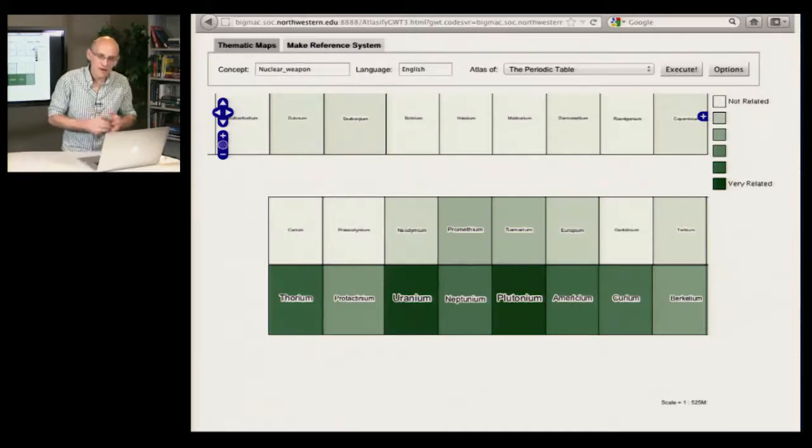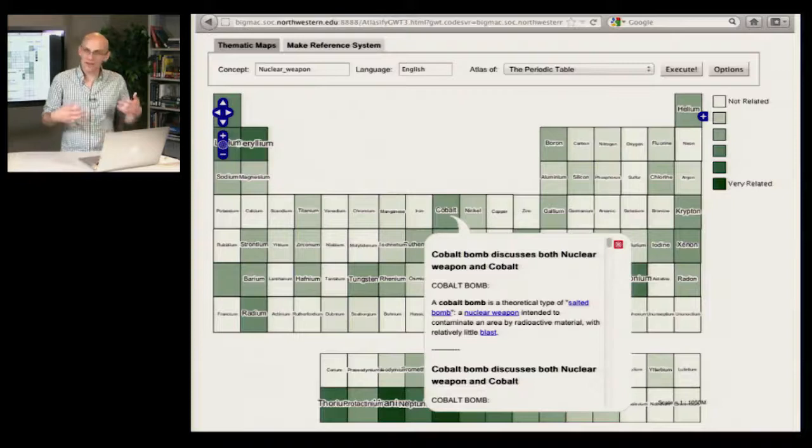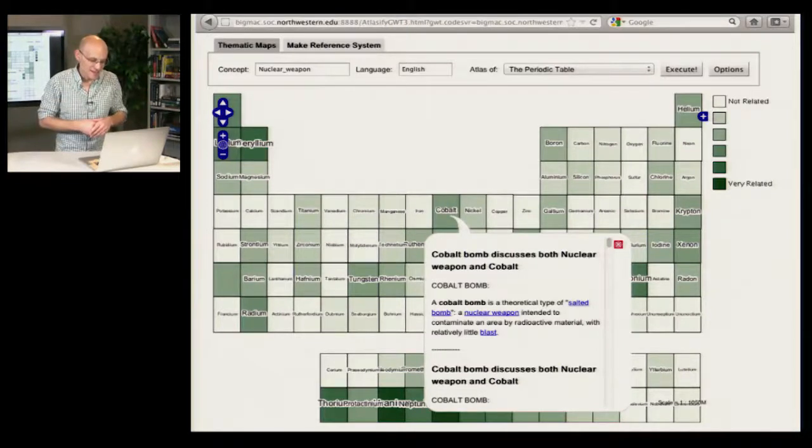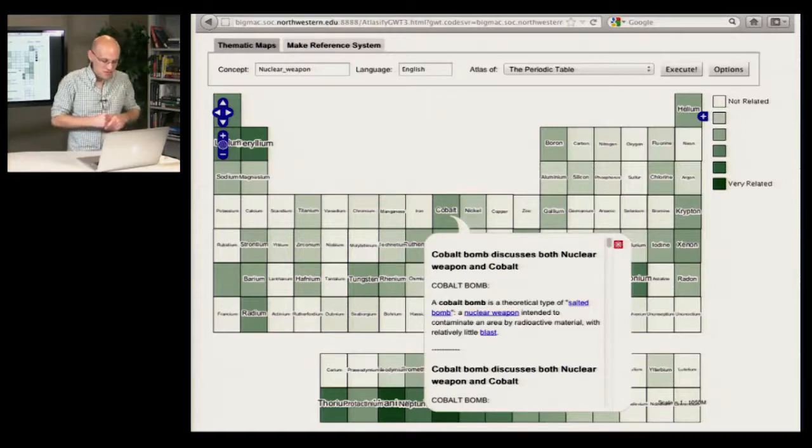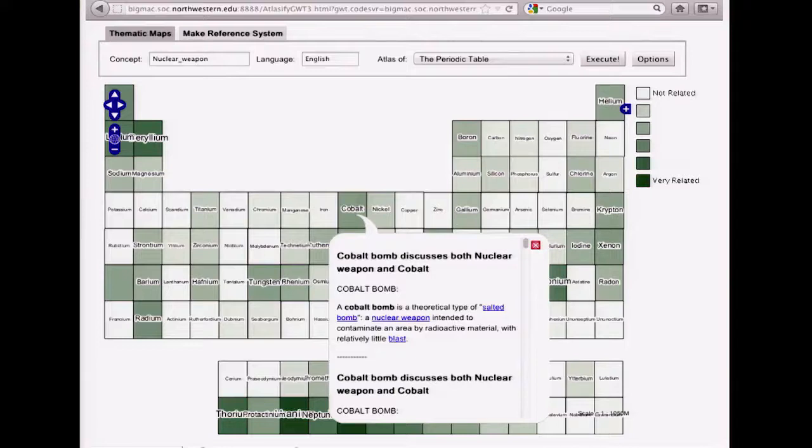You can zoom in and zoom out. Note that uranium and plutonium are indicated to be highly related, and just like with geography, you can click on a spatial entity and get natural language explanations of the relationships between the clicked entity and the query concept. So in this case, the user clicked on what looks like cobalt, and the system is showing relationships between nuclear weapon and cobalt.